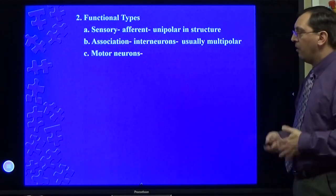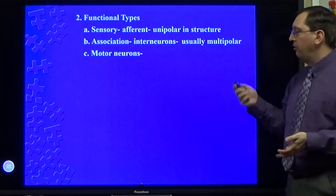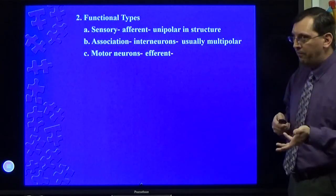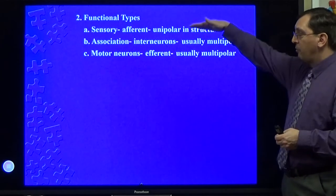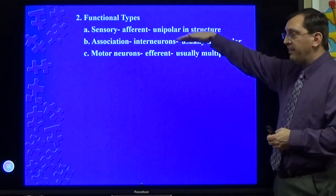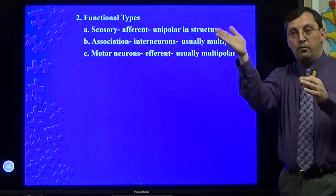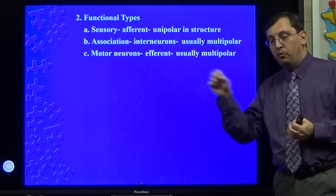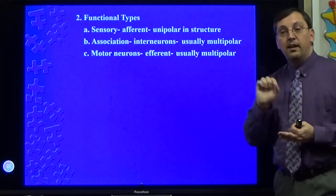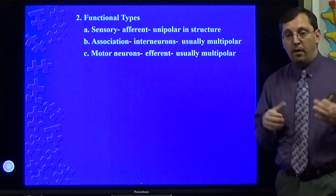And the third type are called motor neurons because their job is to cause an effect—they're called efferent. They are usually also multipolar as well. So these guys receive information, send it to these guys. These guys kind of relay it around to where it's supposed to go. And these guys send it back to the things that are necessary to do the job. Send it to a muscle. Send it to a gland. Tell it to do a job. They're going to basically route it around.